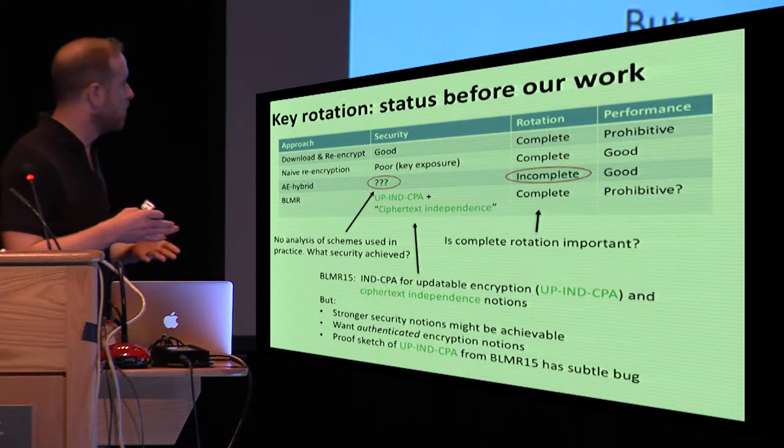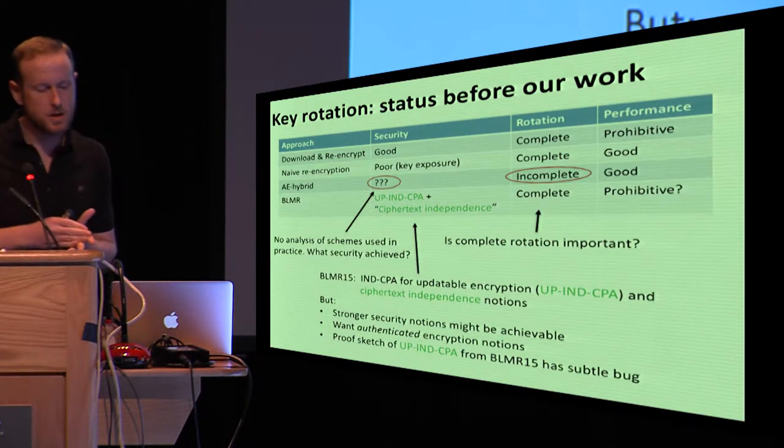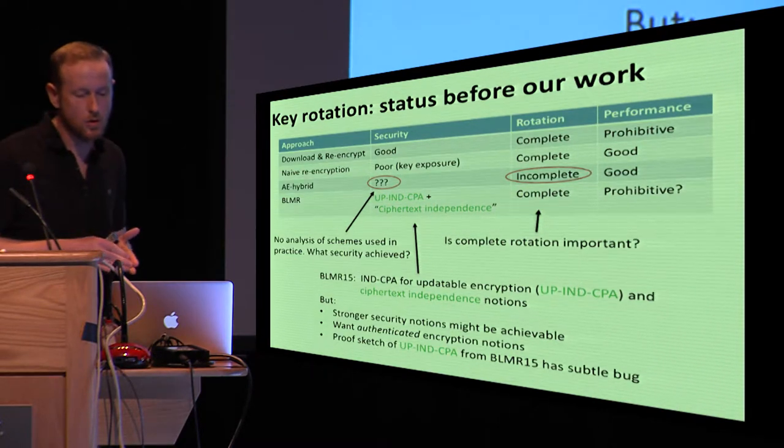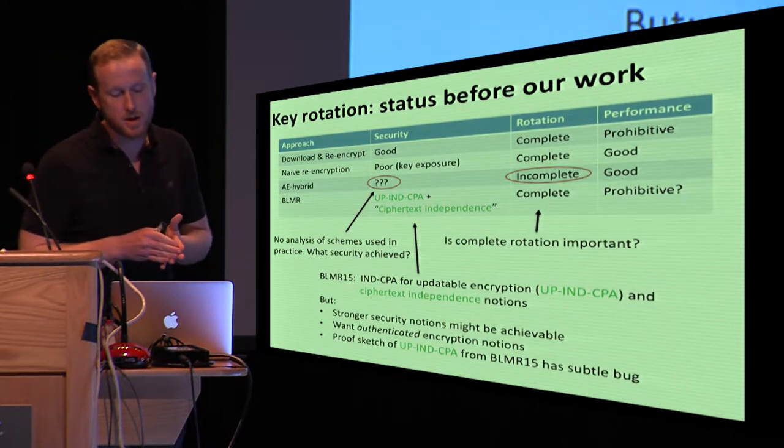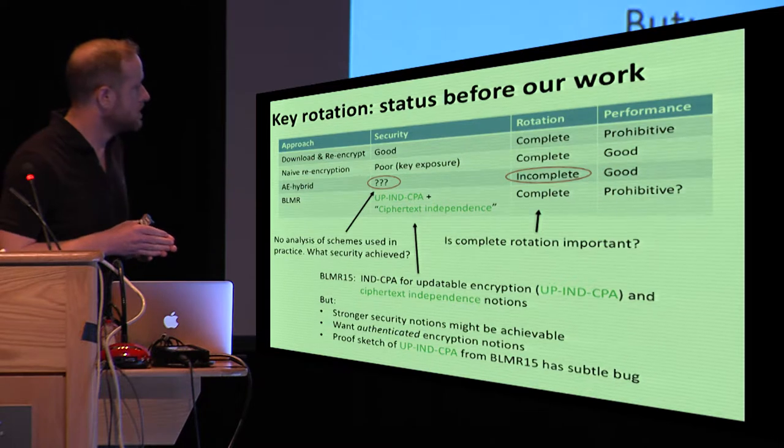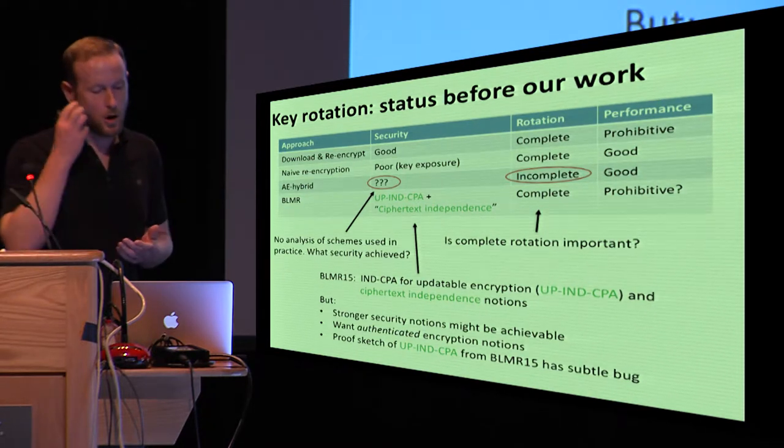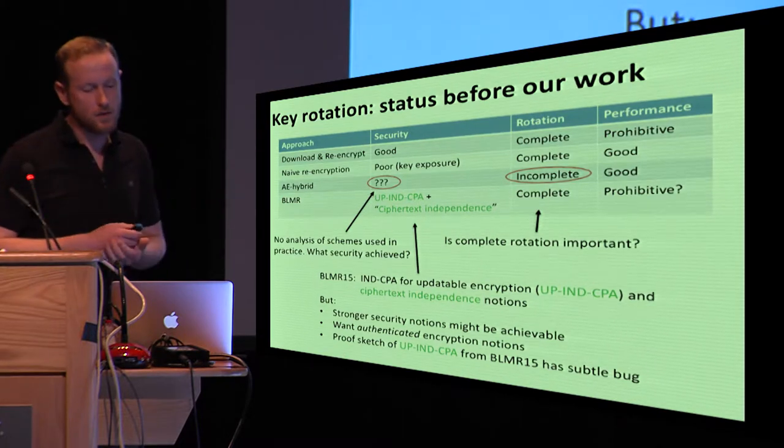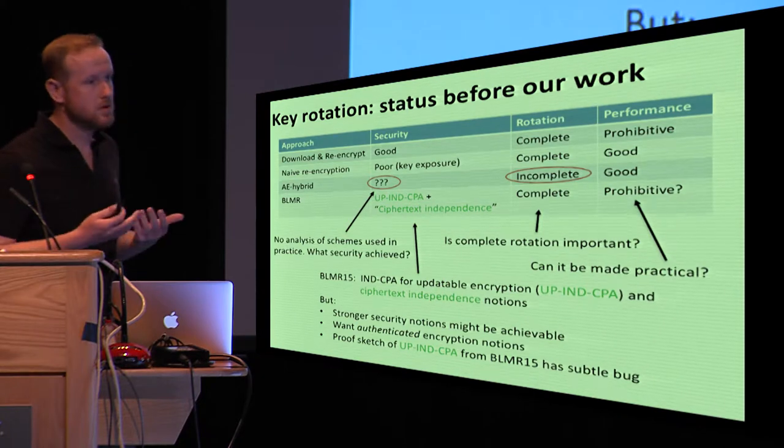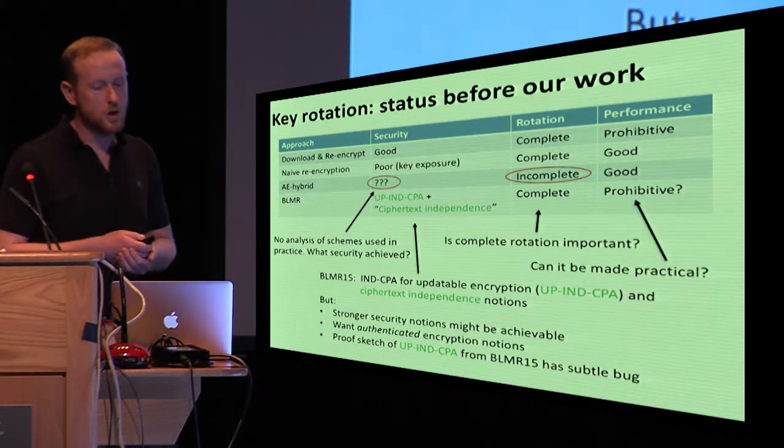So we looked at this and saw, well, one, it's clear that we can probably achieve stronger security notions than what they are achieving. We wanted to also treat authentication, so we need, in practice, authenticated encryption, not just IND-CPA security. And there was also a subtle bug in the proof sketch of IND-CPA from the BLMR15 scheme that I just showed, and so we wanted to fix that as well. And finally, there's a question of whether these schemes that use kind of more expensive operations can be made practical, or is this really going to be too prohibitive in practice?